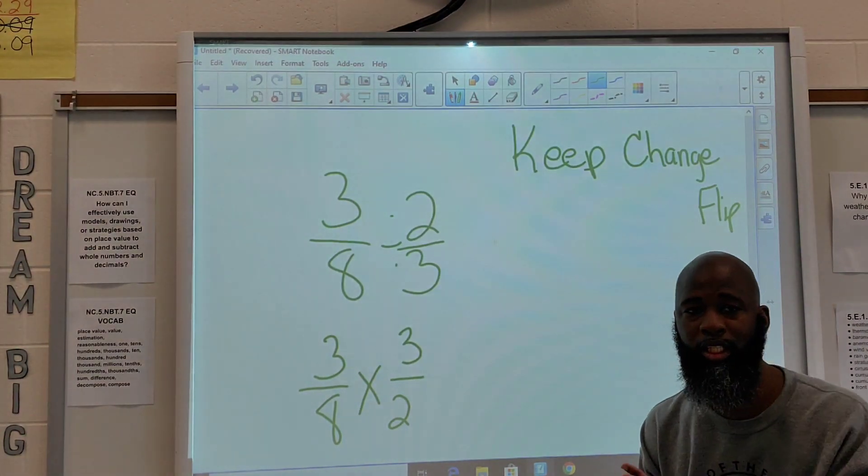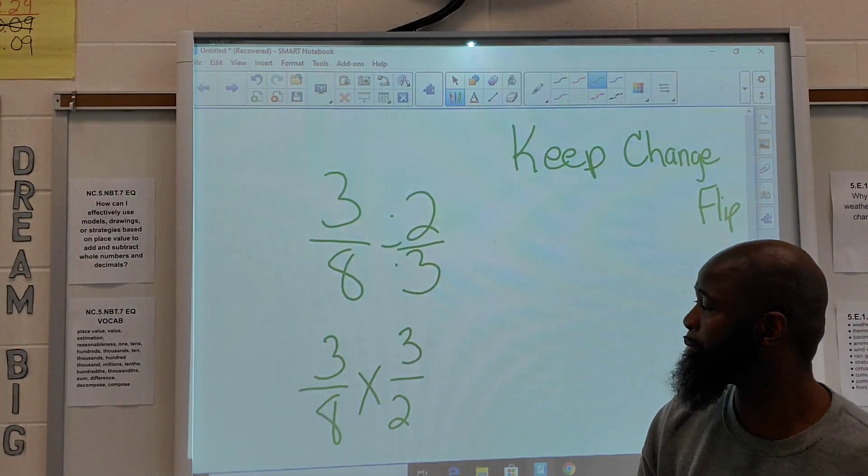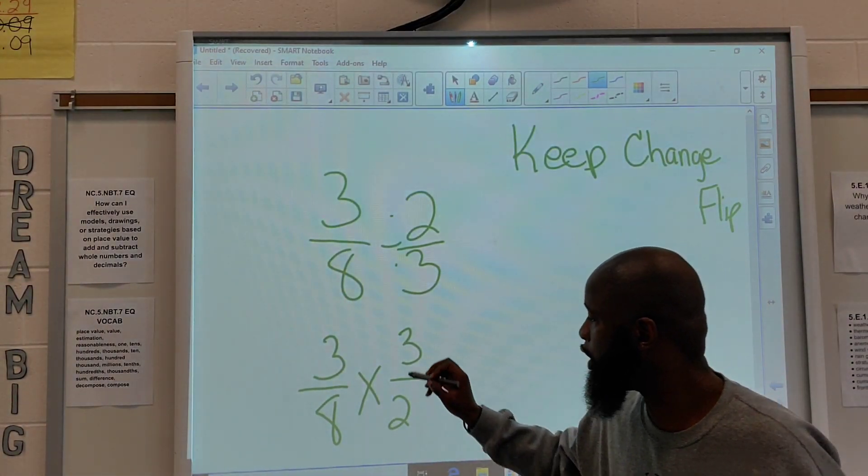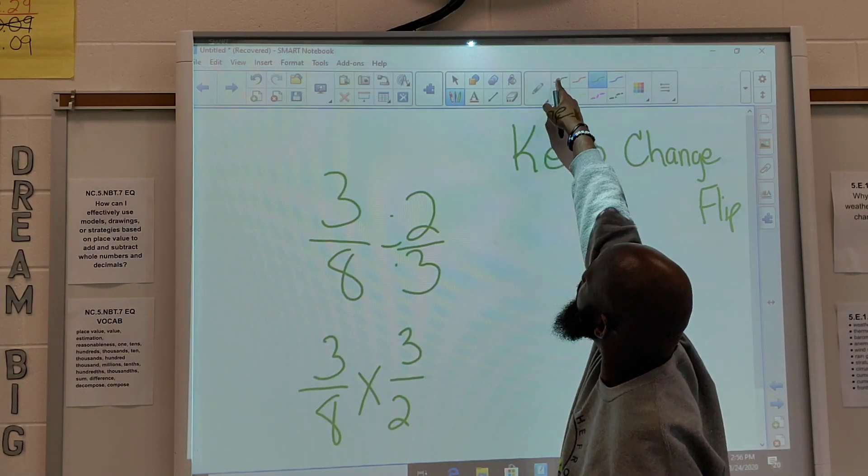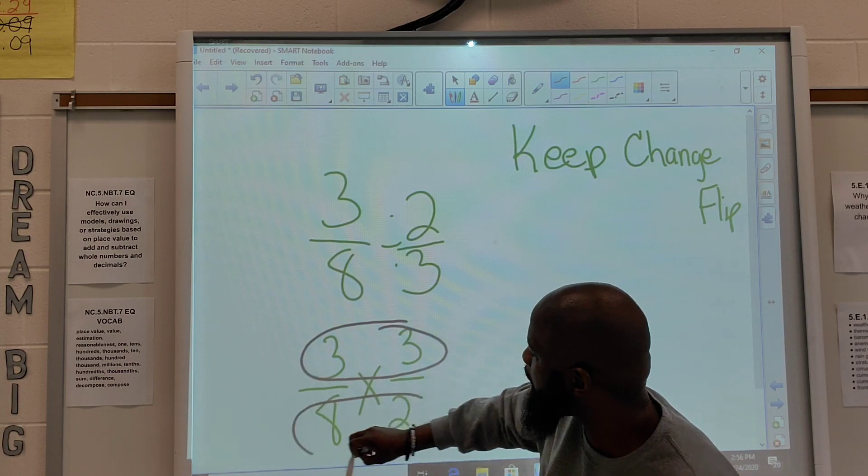Alright? Now, in the last example, butterfly, we multiply diagonally. We made the butterfly. This time, since we're doing keep, change, flip, we're actually going to multiply straight across. So, numerator times numerator and denominator times denominator.